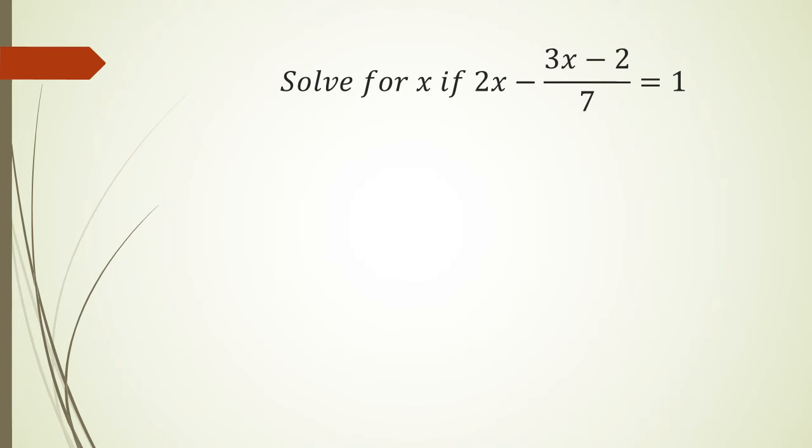In this example, if I rearrange this I have 2x - (3x - 2)/7 = 1. The first thing I want to do is get rid of the 2x, so I'm going to have -(3x - 2)/7 = 1 - 2x.